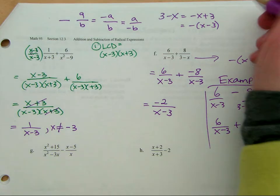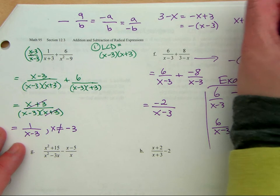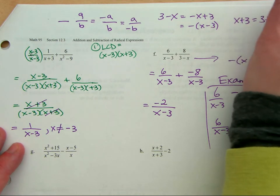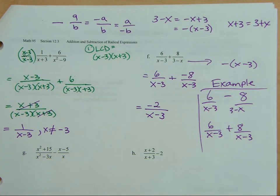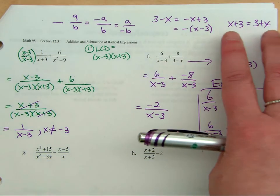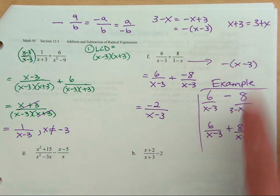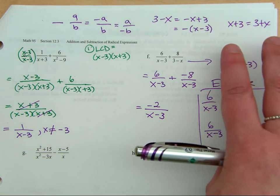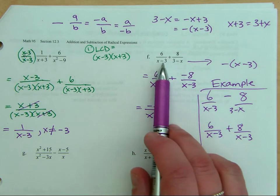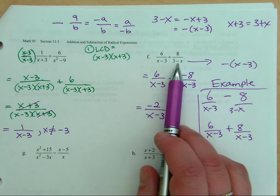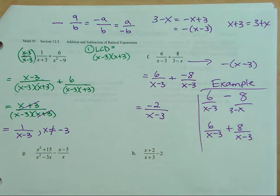X plus three is equal to three plus X — that one is just a matter of order. But the difference here is that these are the same numbers and variables but the signs are opposite of each other. That's the idea of factoring out a negative.